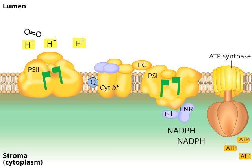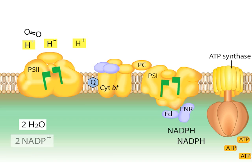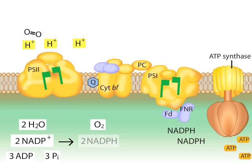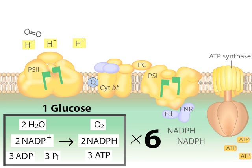From four photons absorbed by Photosystem II and four by Photosystem I, the Z-pathway can consume two molecules of water, two molecules of NADP+, and three molecules of ADP and inorganic phosphate to produce one molecule of molecular oxygen, two of NADPH, and three of ATP. To fix six molecules of carbon dioxide into one molecule of glucose, the process would have to run six times.